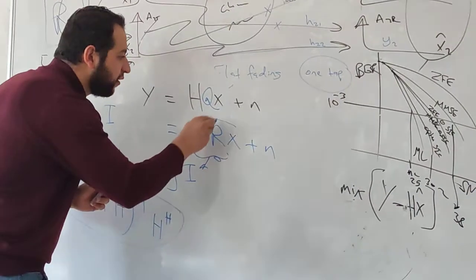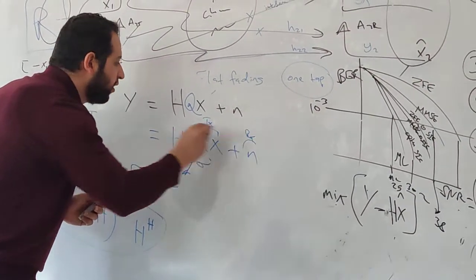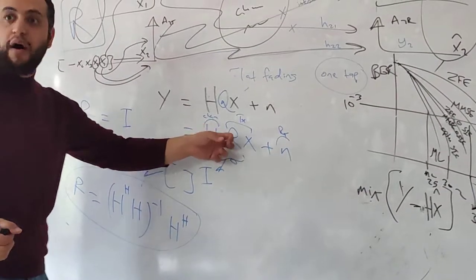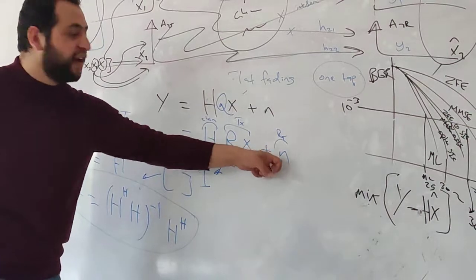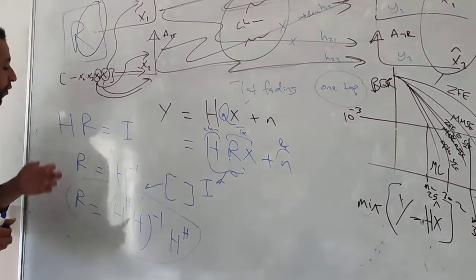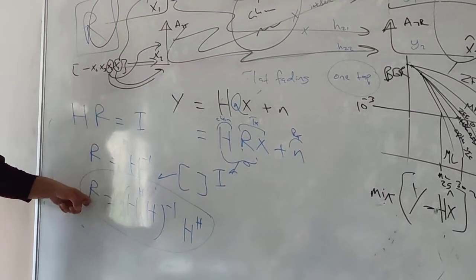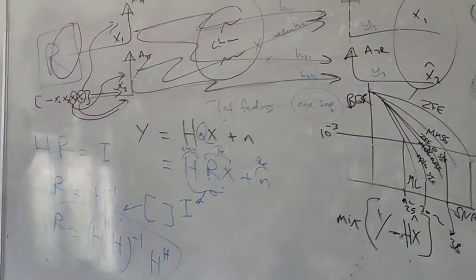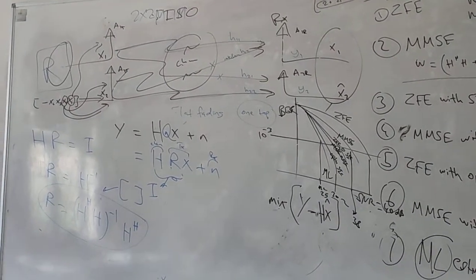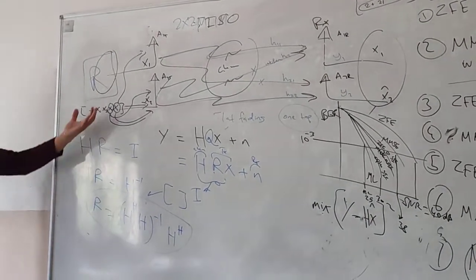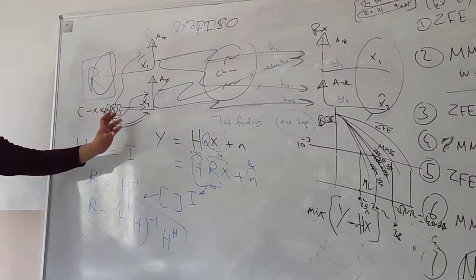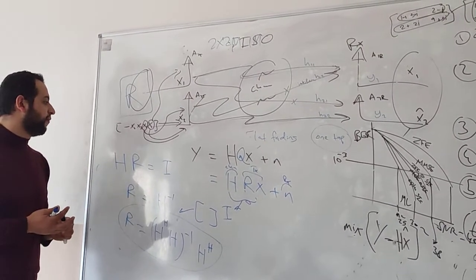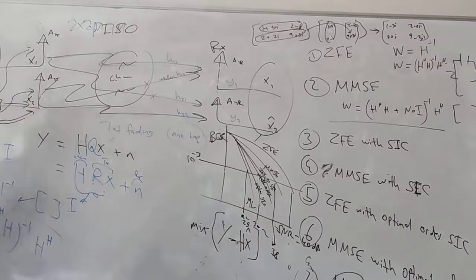This is at the transmitter. This is at the receiver. This is because of the channel. X is the data you produced at the transmitter. R you put at the transmitter. H is because of the channel. And N is because of the receiver. You calculated R at the transmitter. Now compare R here with W — they are the same thing, but I calculated this ahead of time at the transmitter, and I pre-code my signal before I transmit it so that I remove the effect of the channel.